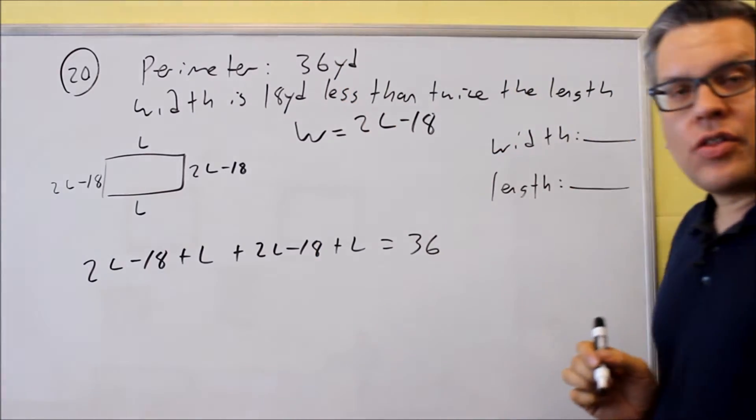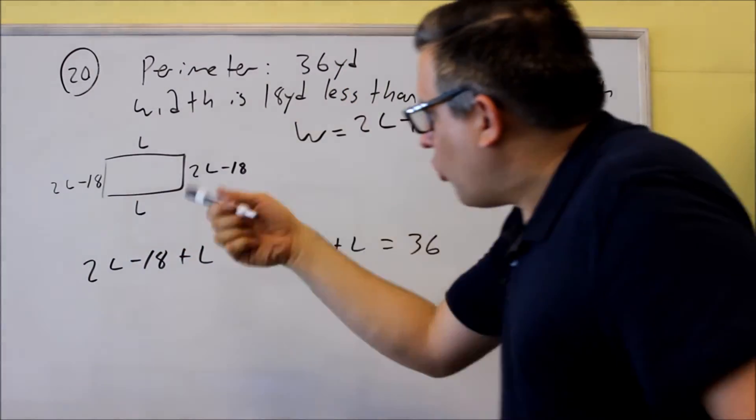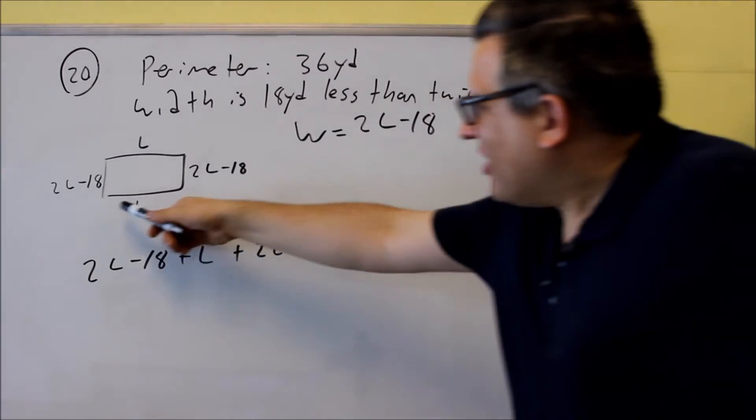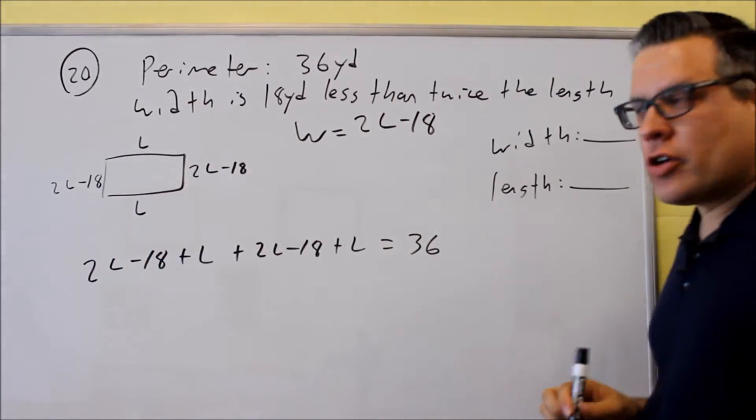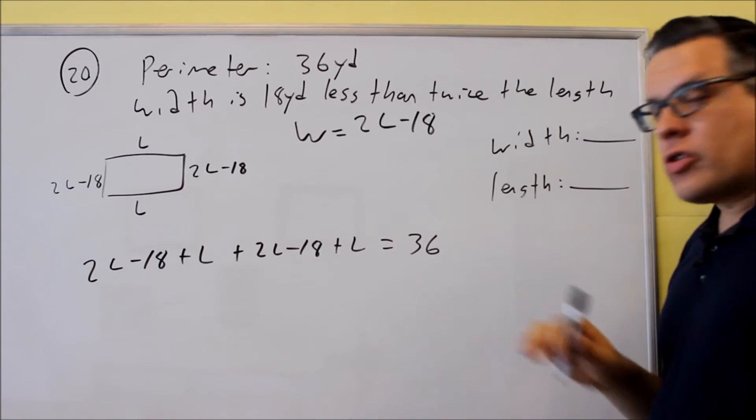All that equals 36. Notice all I did was go around the drawing and add all the sides. Remember that every single side has to have an expression. We're adding four sides together here.